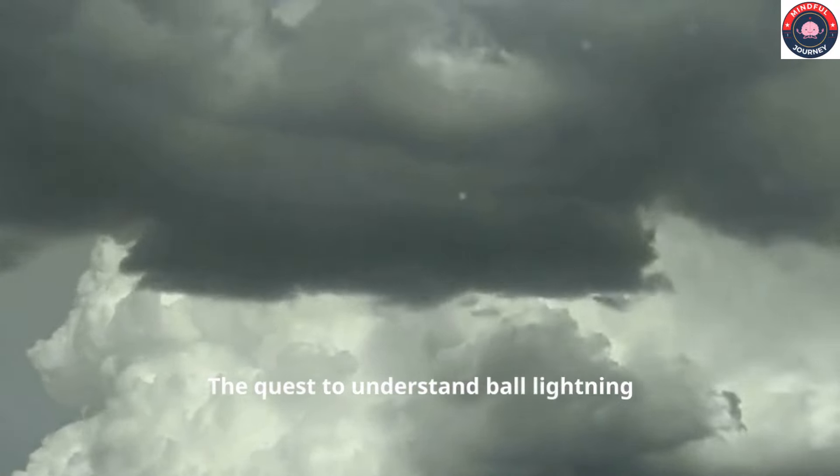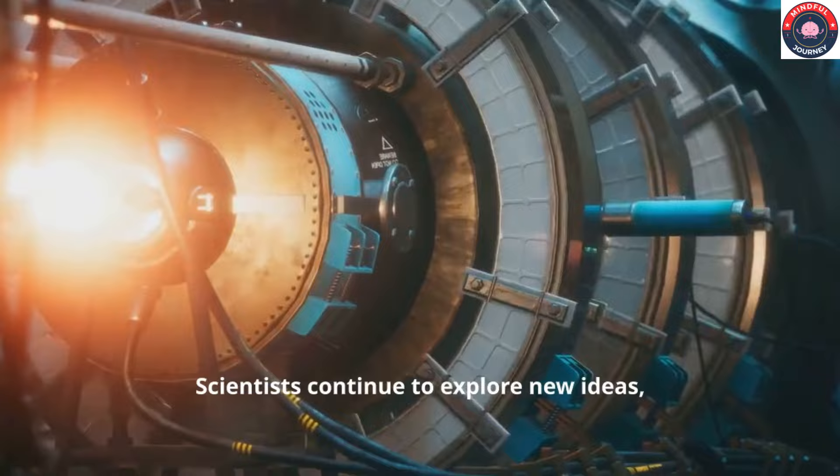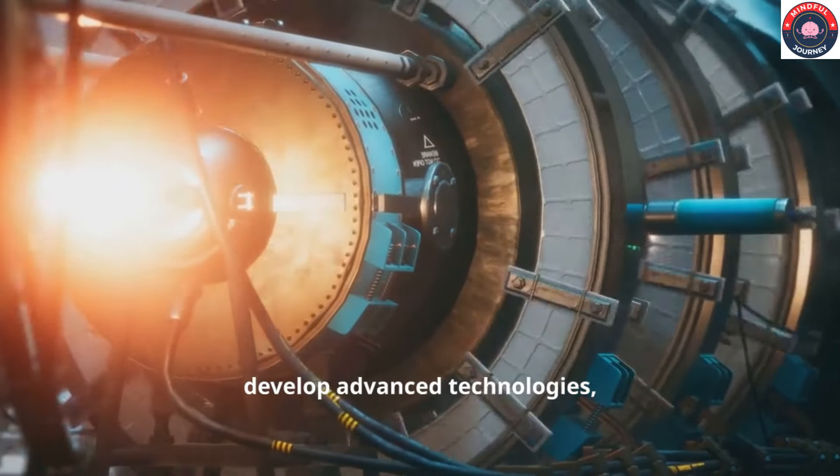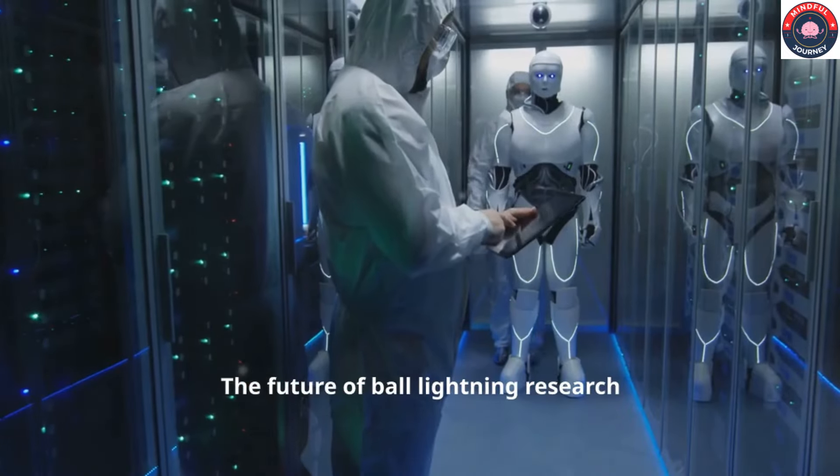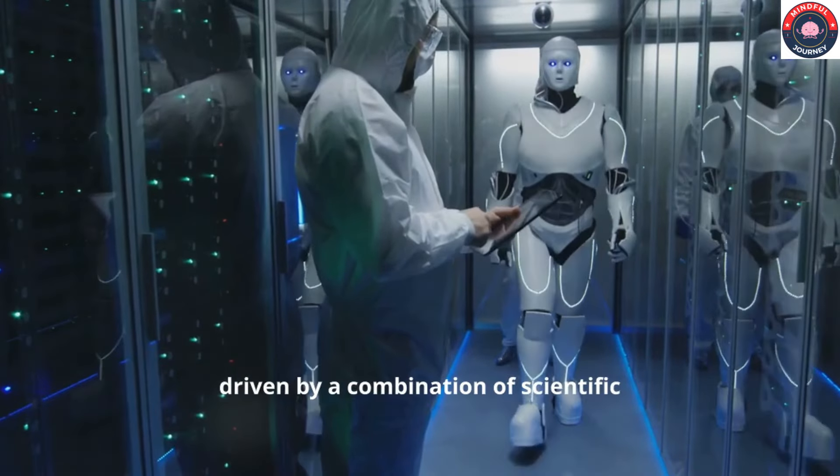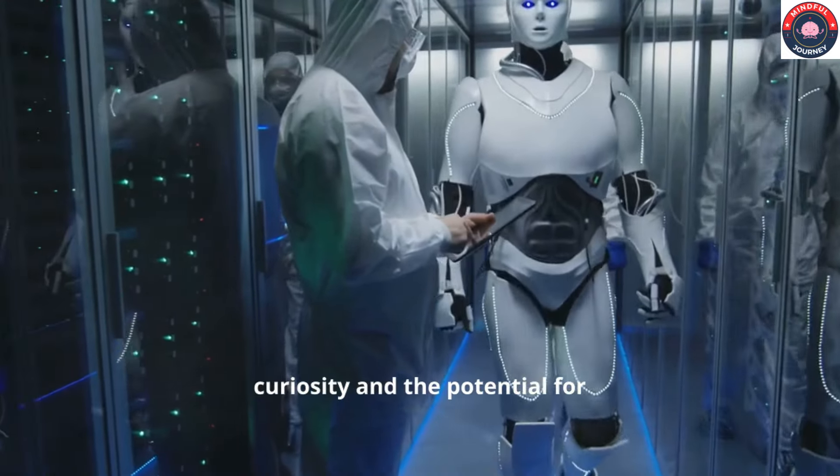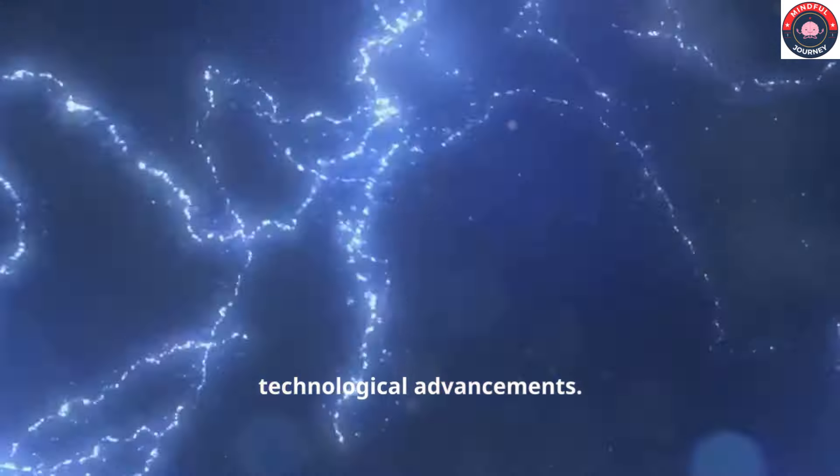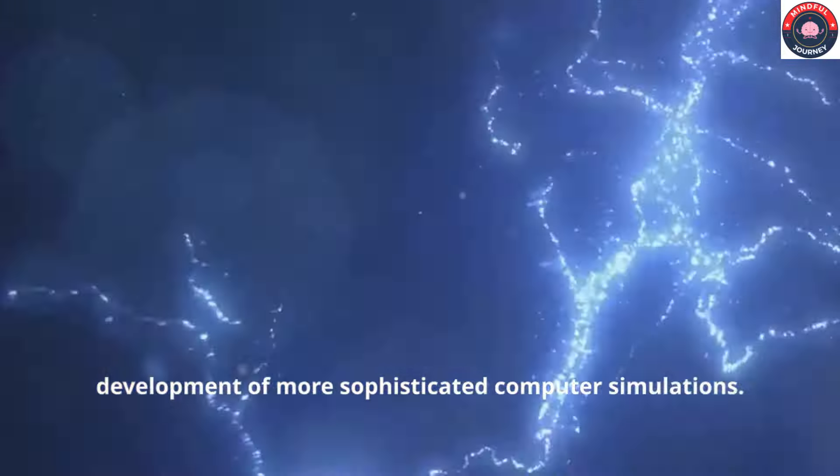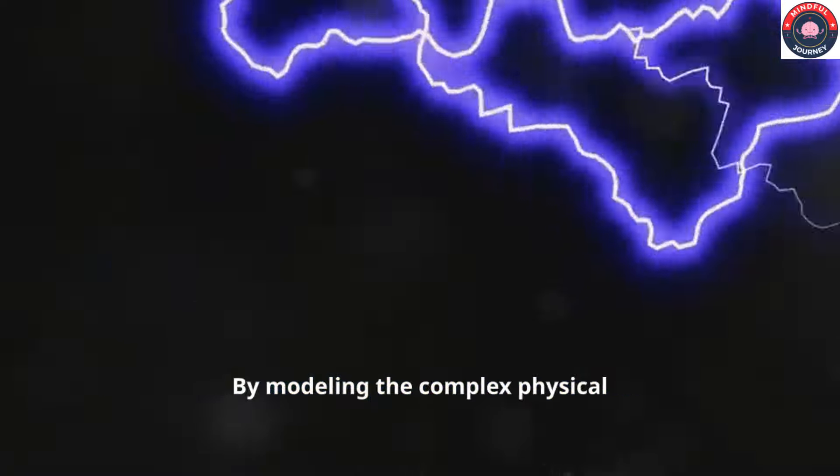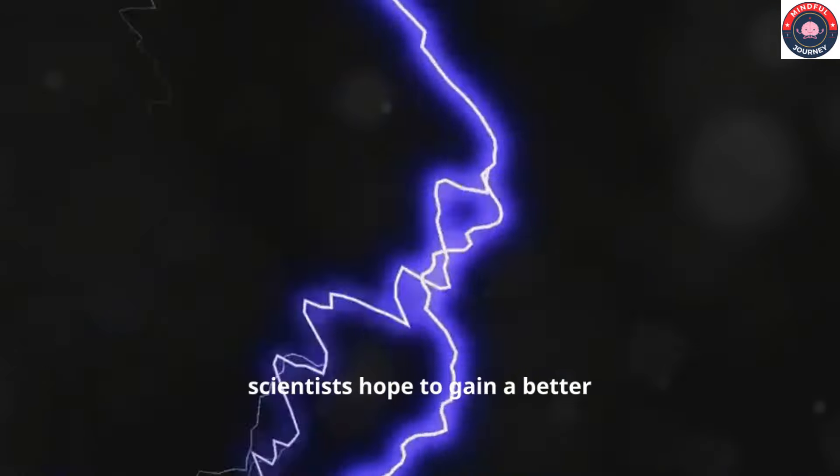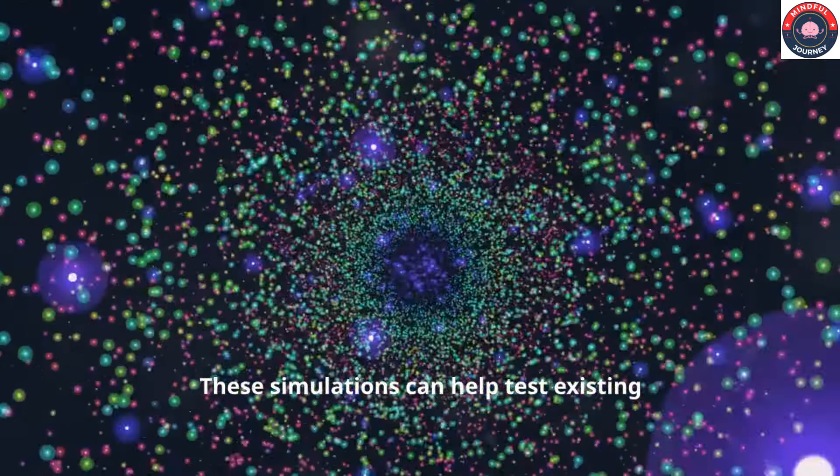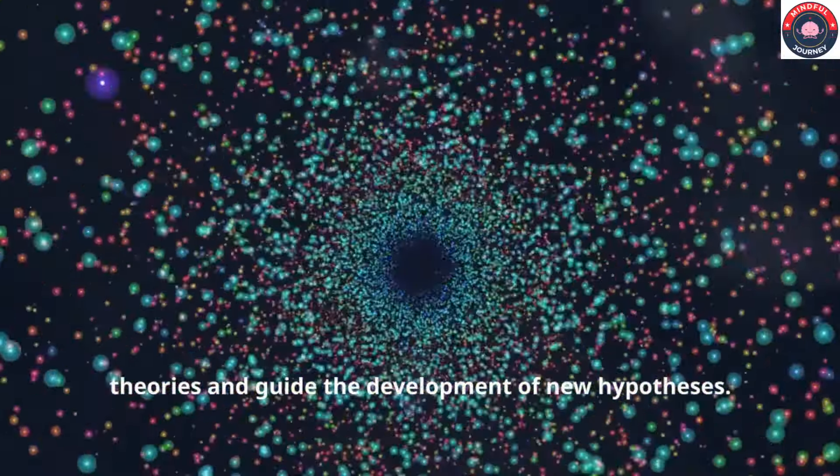The quest to understand ball lightning is far from over. Scientists continue to explore new ideas, develop advanced technologies, and conduct experiments to unravel its secrets. The future of ball lightning research holds exciting possibilities, driven by a combination of scientific curiosity and the potential for technological advancements. One promising area of research is the development of more sophisticated computer simulations. By modeling the complex physical processes that occur during thunderstorms, scientists hope to gain a better understanding of the conditions that lead to the formation of ball lightning. These simulations can help test existing theories and guide the development of new hypotheses.